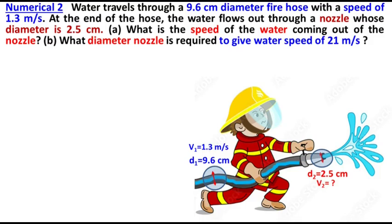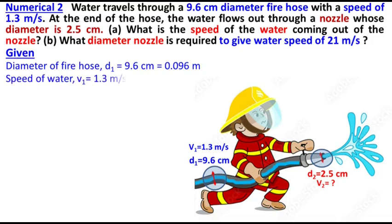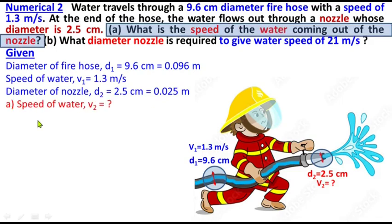First, let's look at what's given. The diameter of the hose D₁ is 9.6 centimeters, which converts to 0.096 meters—9.6 divided by 100. The speed of the water V₁ is 1.3 meters per second. The diameter of the nozzle D₂ is 2.5 centimeters, which is 0.025 meters. We need to find the speed of the water coming out of the nozzle.